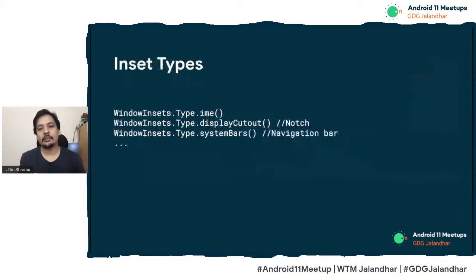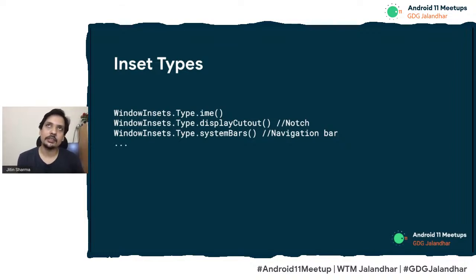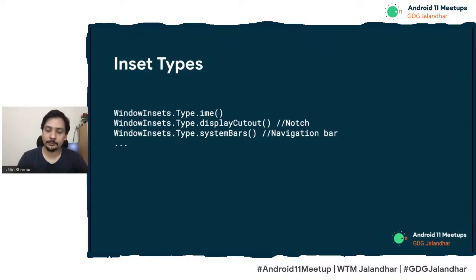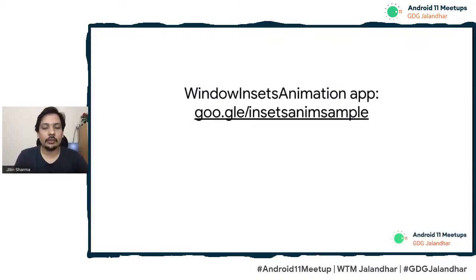Window insets have multiple types. IME is one of them, representing keyboard-related motion. Display cutout represents the notch — unlike IME, which is dynamic because it can come and go, the notch is a physical part of the phone, but you can still get its insets using InsetsType.displayCutout. You also have system bars, representing the navigation bar, which may or may not be present depending on whether the user has enabled the navigation bar instead of motion-based gestures. You can use system bar window insets to animate your UI accordingly. A code sample for all this is available via the link shown.